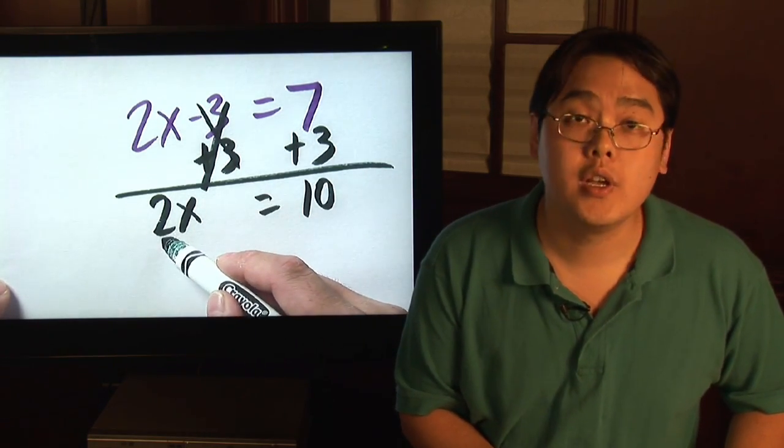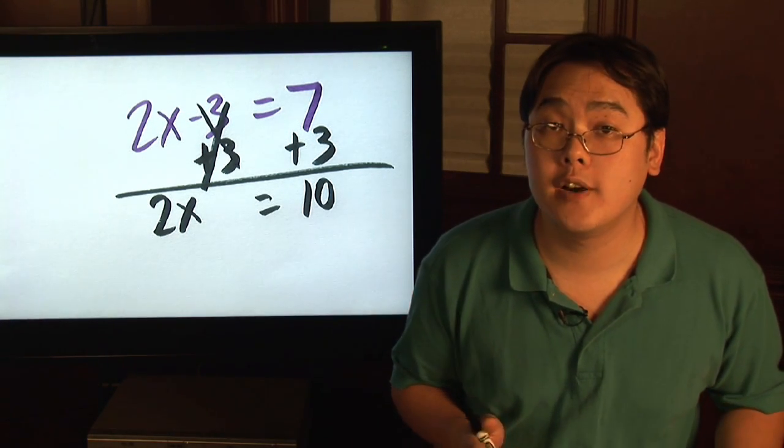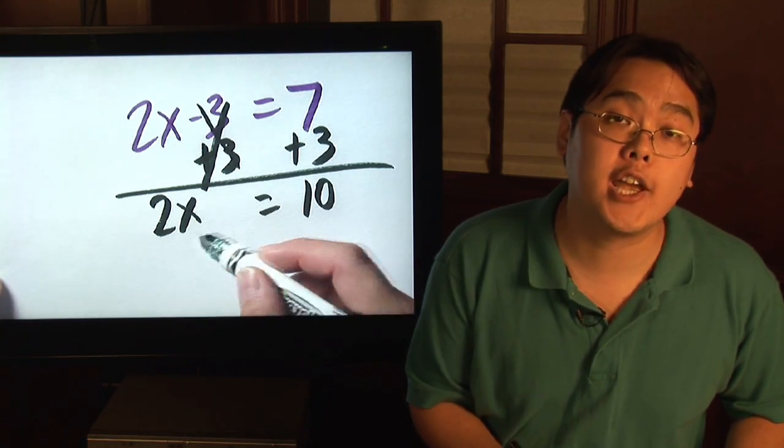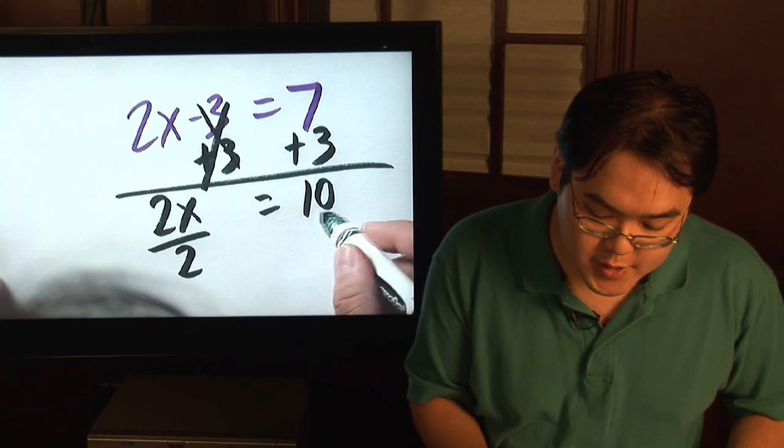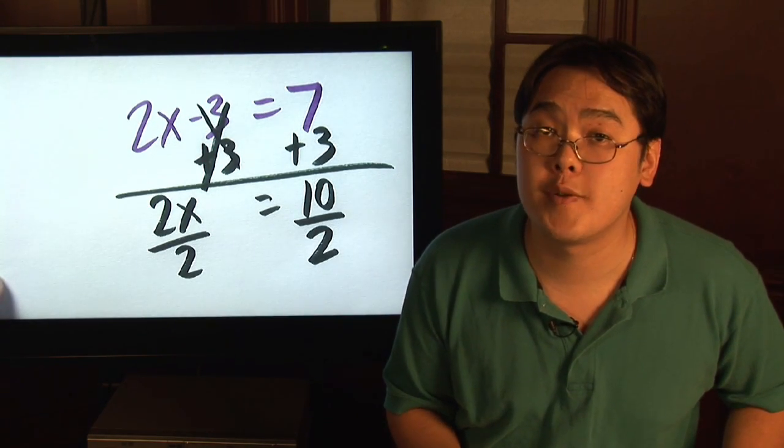Now the number 2 is multiplied with the x. So again, to solve for x, to get x by itself, you do the opposite operation. Opposite of multiplication is division. So that means you would divide both sides by 2 to preserve equality, to preserve the balance.